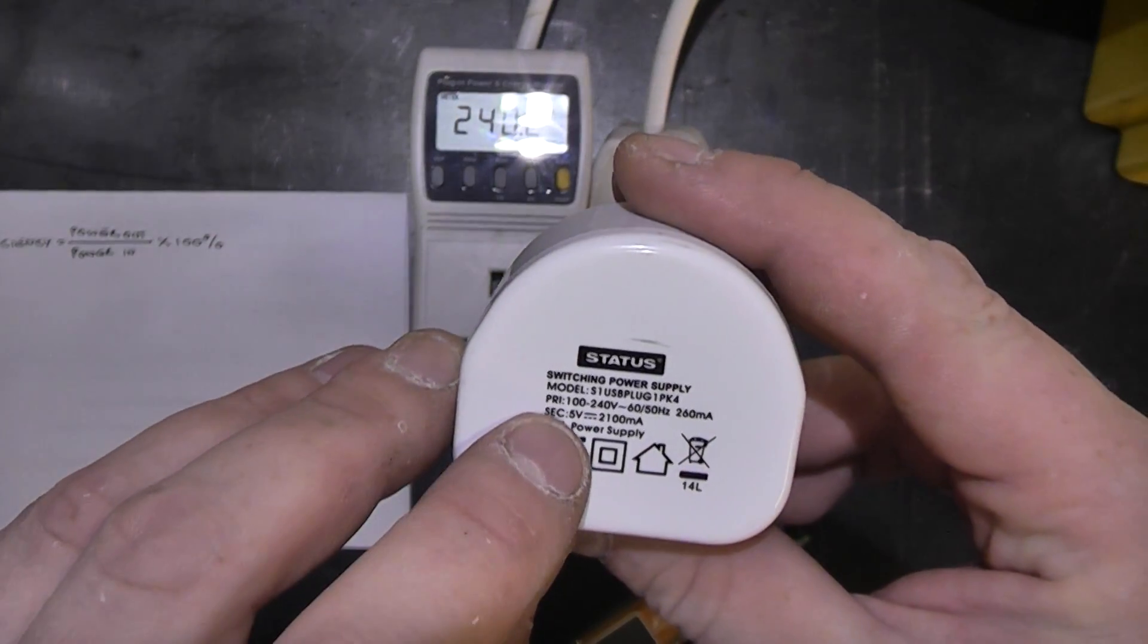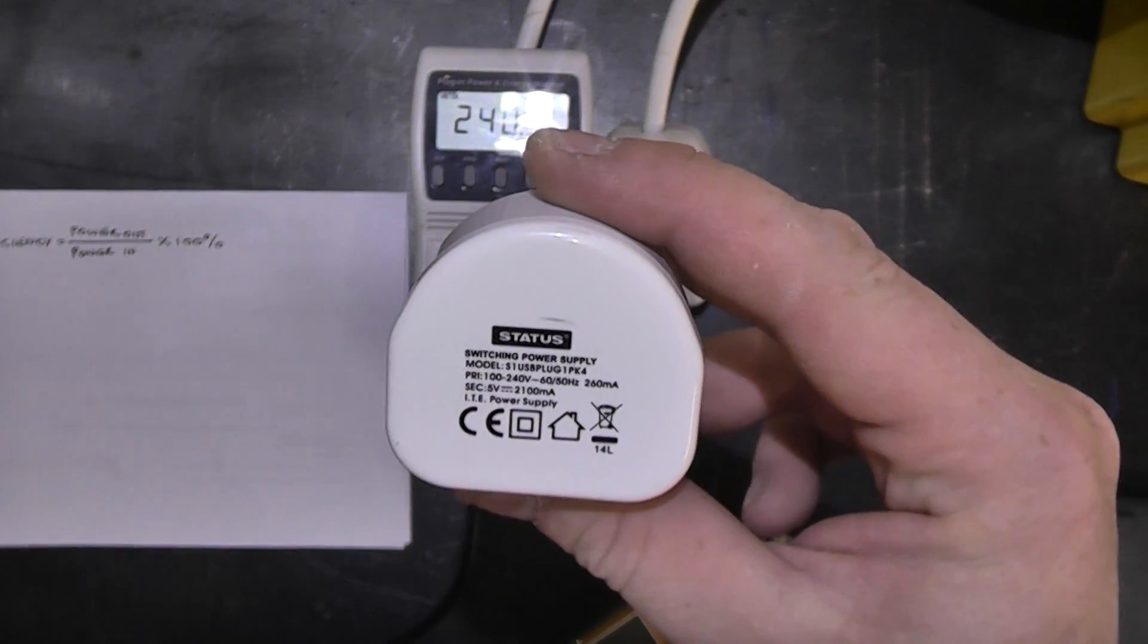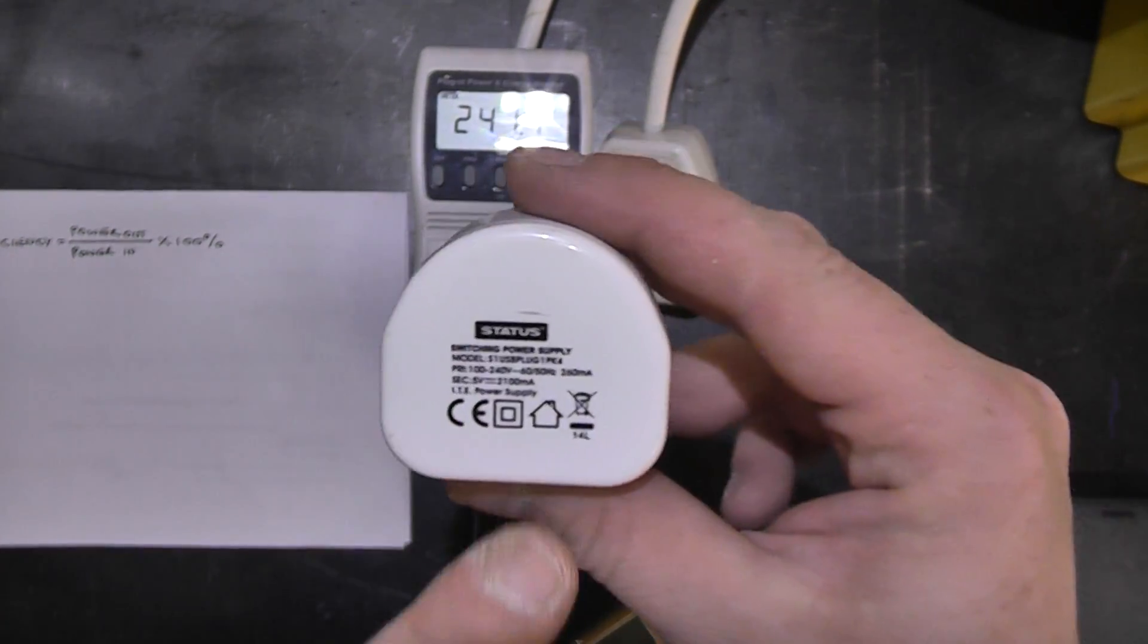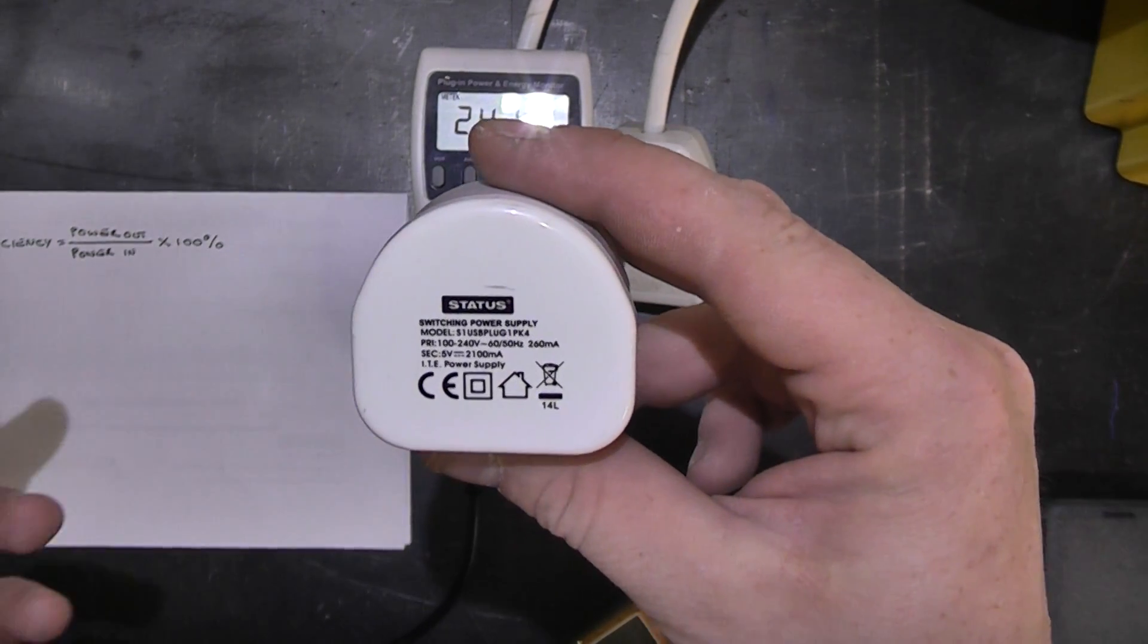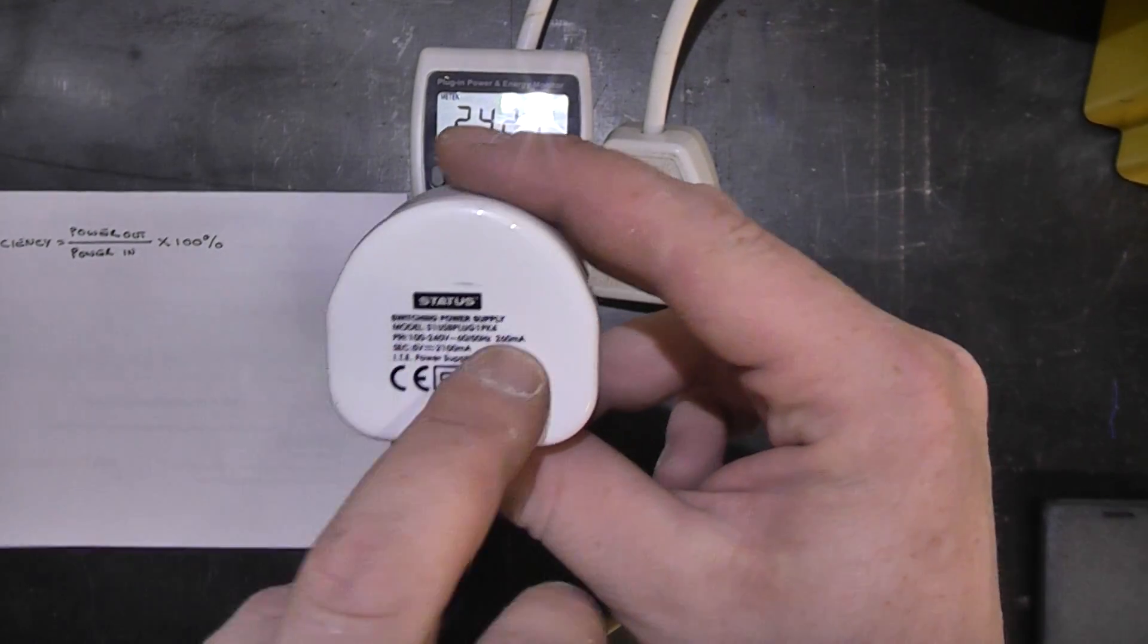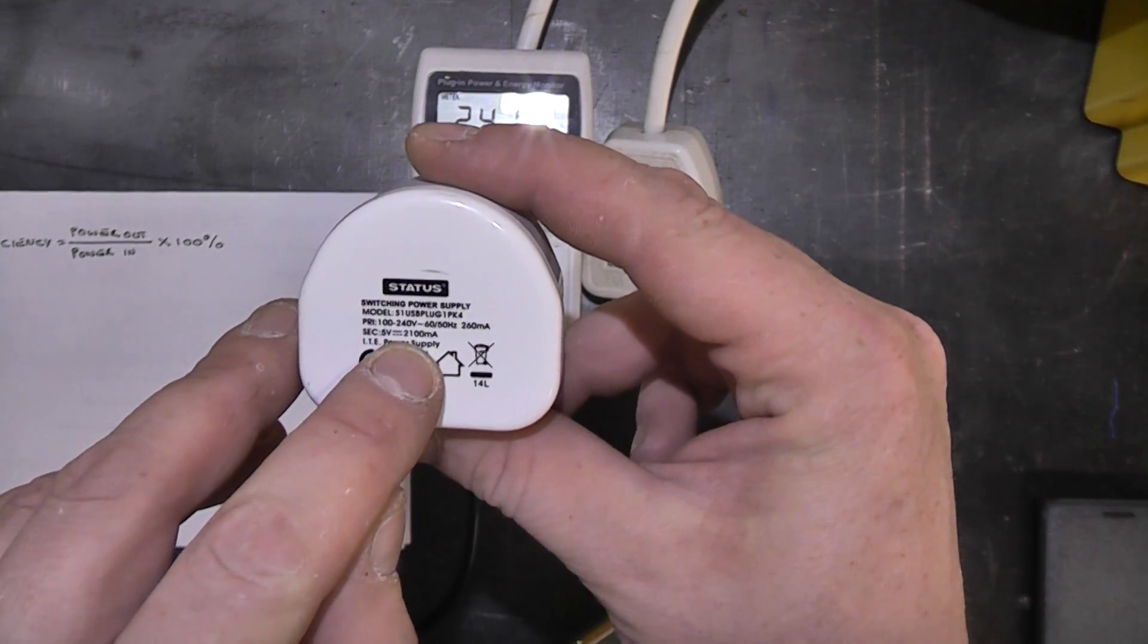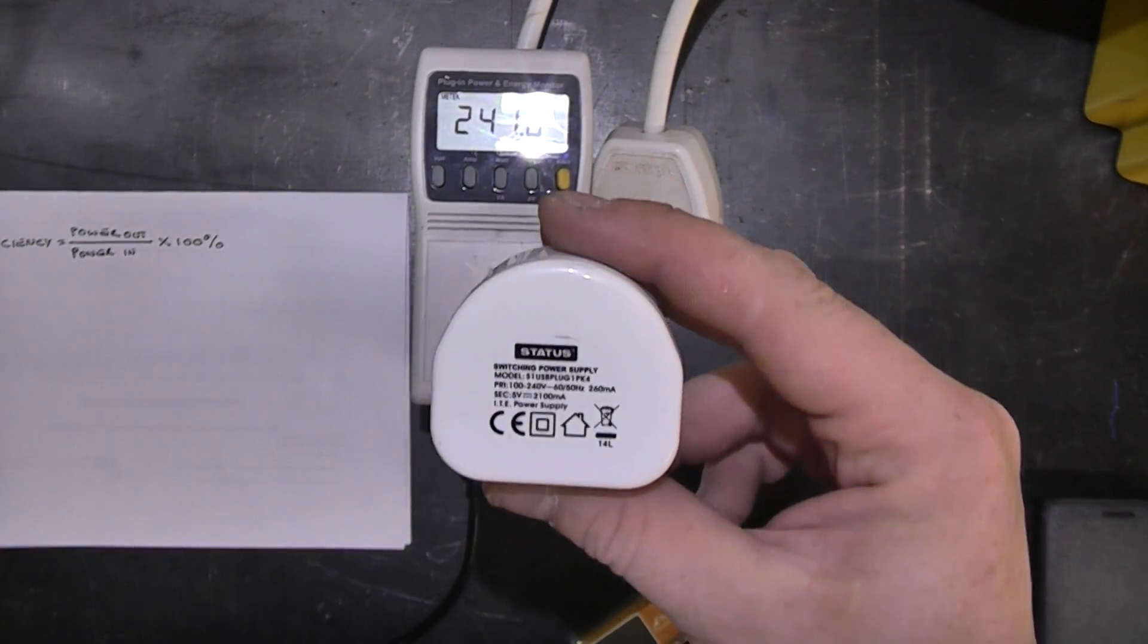It's made by Status which manufactures stuff for Asda which is owned by Walmart and it's a switching power supply. Real focus on it. It's primary is 100 to 240 volts so it's universal so if you take a go on holiday to North America or another country that operates on a lower voltage, 60-50 hertz. Now it says on here 260 milliamps. 260 milliamps what is that 100 volts or 240 volts? Because if it's a fixed current input and the output voltage is varying that means that the output current is going to vary but it's a secondary 5 volt DC, 2,100 milliamps so that's 2.1 amp supply.